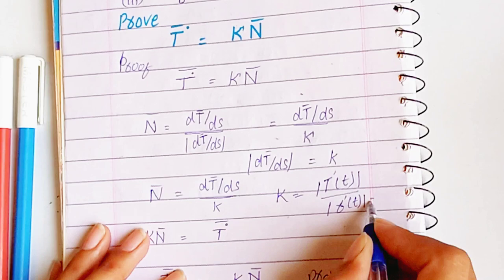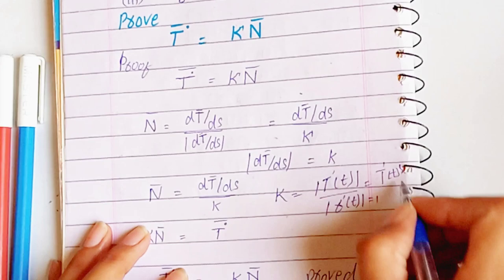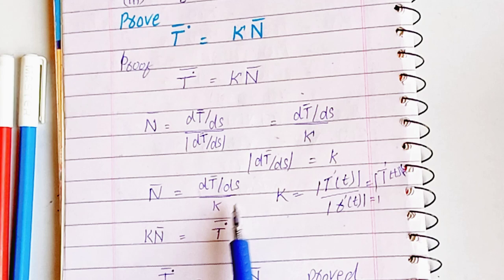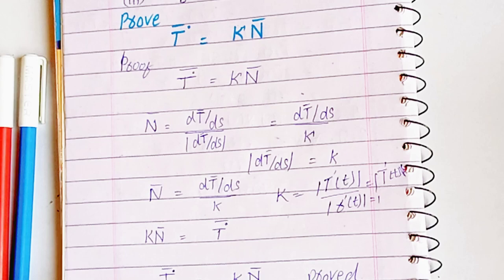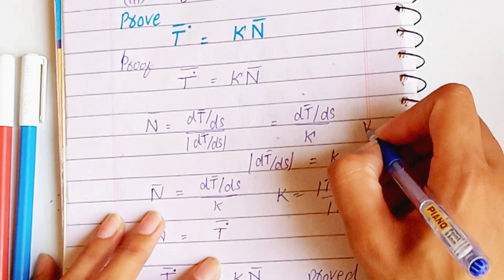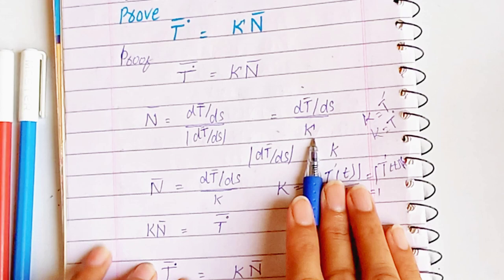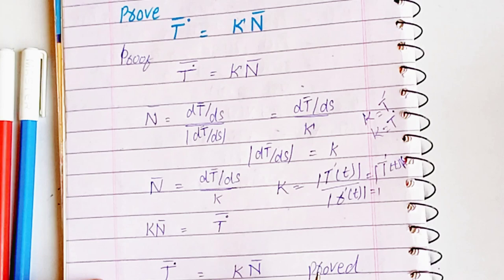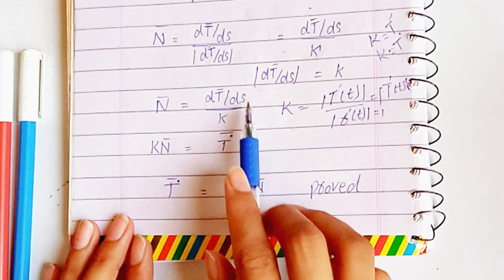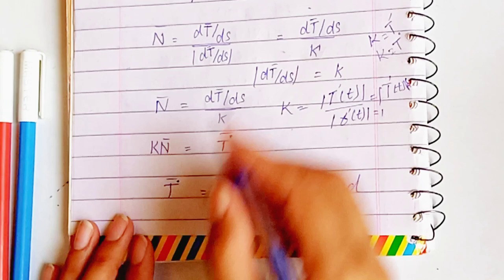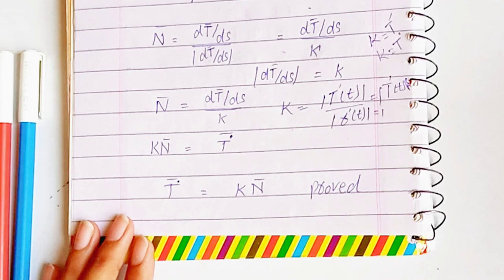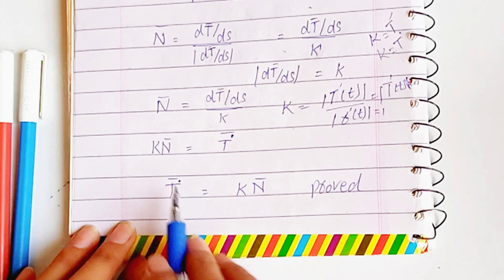We have a theorem that kappa is equal to the magnitude of dT/dt over the magnitude of dr/dt. Now, we have the derivative in prime form and in the S form. Converting between the two, we obtain dT/ds, and multiplying through we get dT/ds equals kappa N, which completes the first proof.